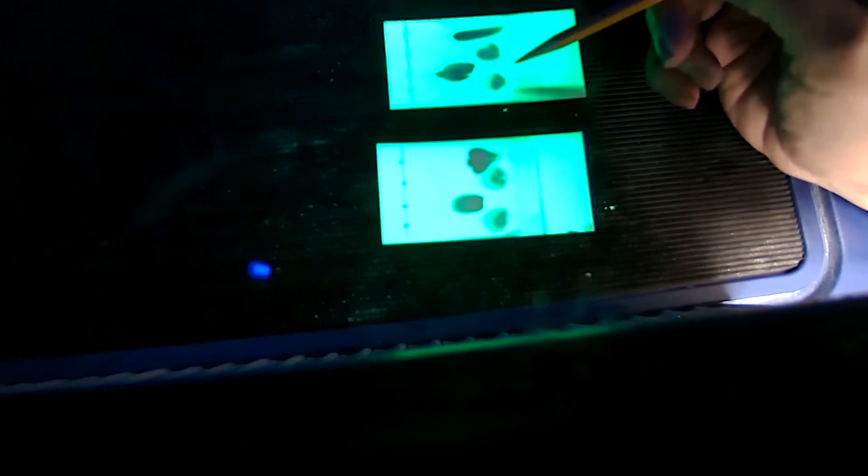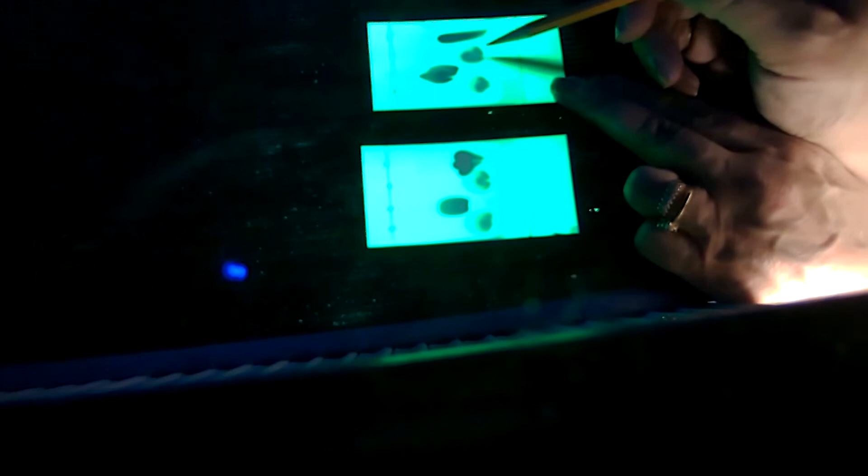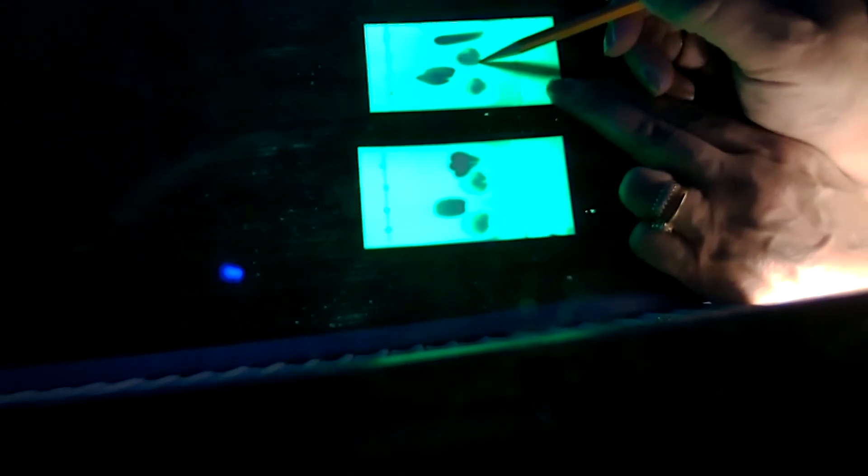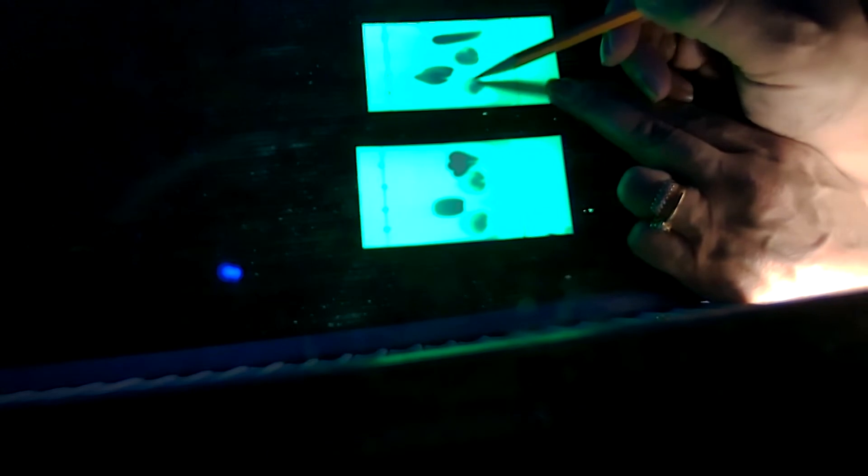And if I take this plate out of the UV lamp, it's not going to show the spot. So I'm going to have to use my pencil here and mark and circle around the spots here.